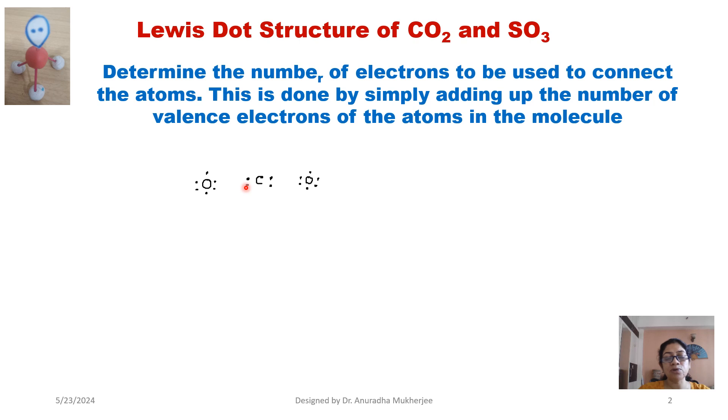So here for carbon dioxide molecule, carbon Lewis dot structure is carbon has four valence electrons, oxygen has six valence electrons. Now to fulfill the octet, oxygen and carbon, they will be sharing two electrons each.